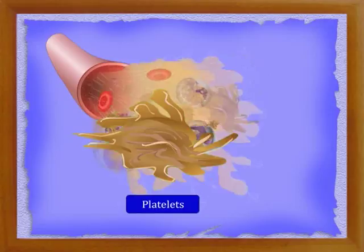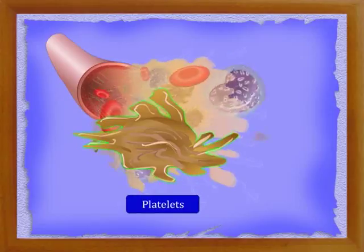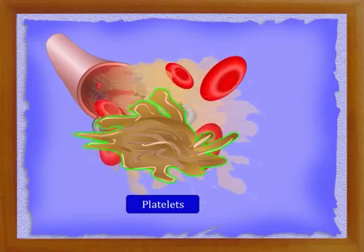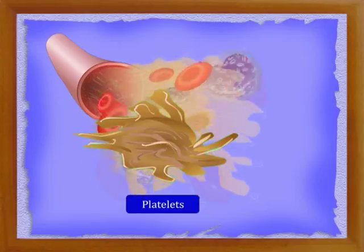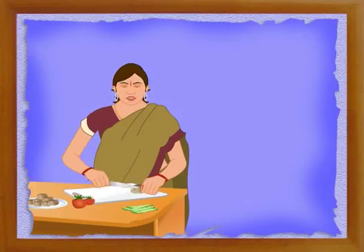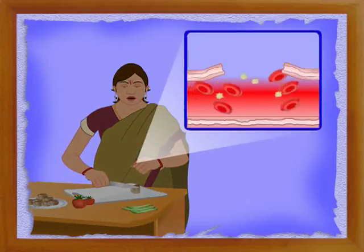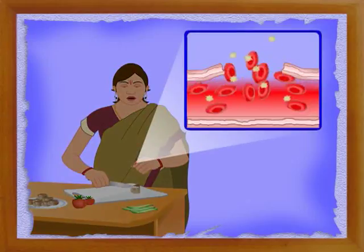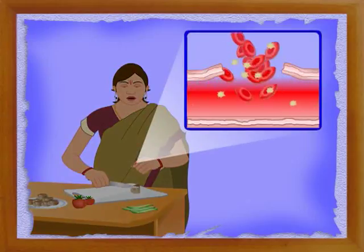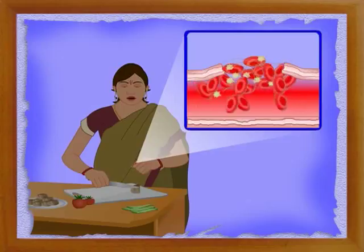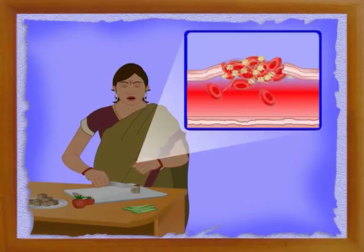Blood platelets, or thrombocytes, are helpful in the formation of blood clots. They have no nucleus. When some portion of the body is cut and blood oozes out, thrombocytes help in the formation of a clot. Clot formation prevents the loss of blood during injuries.